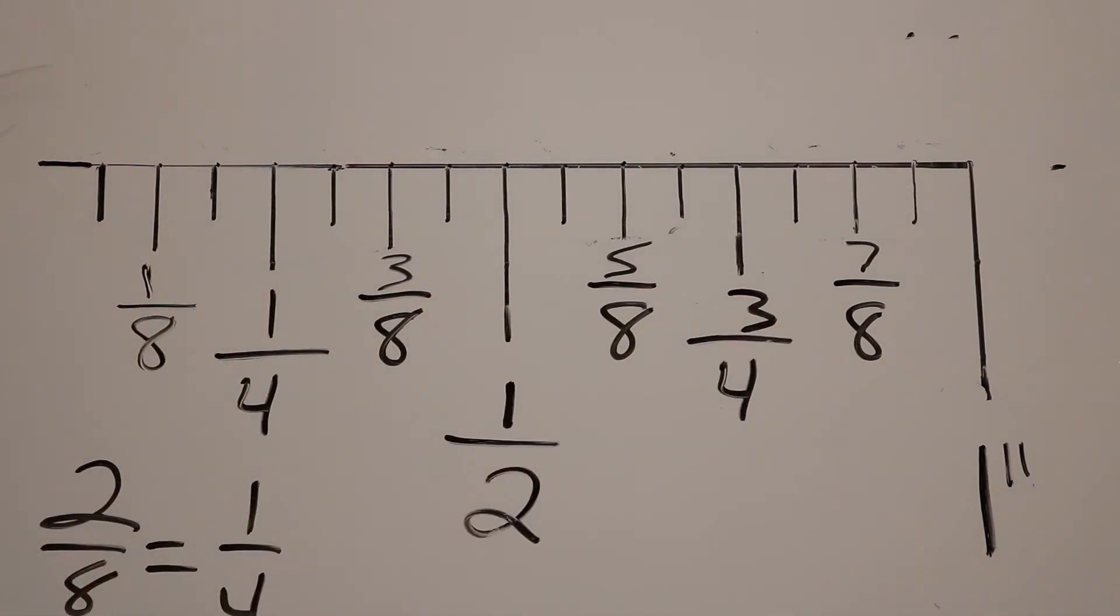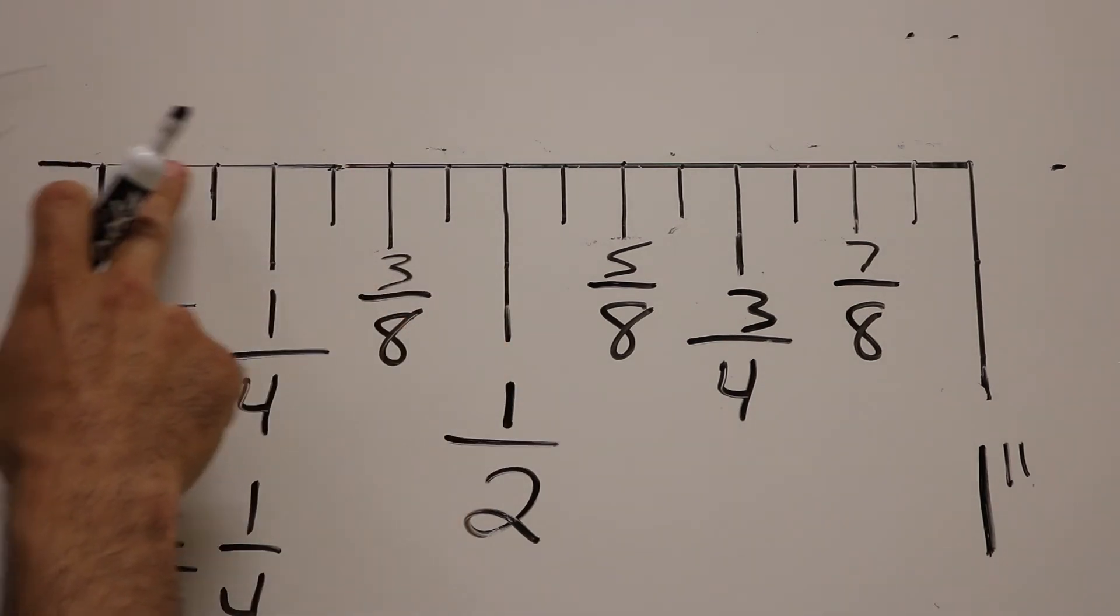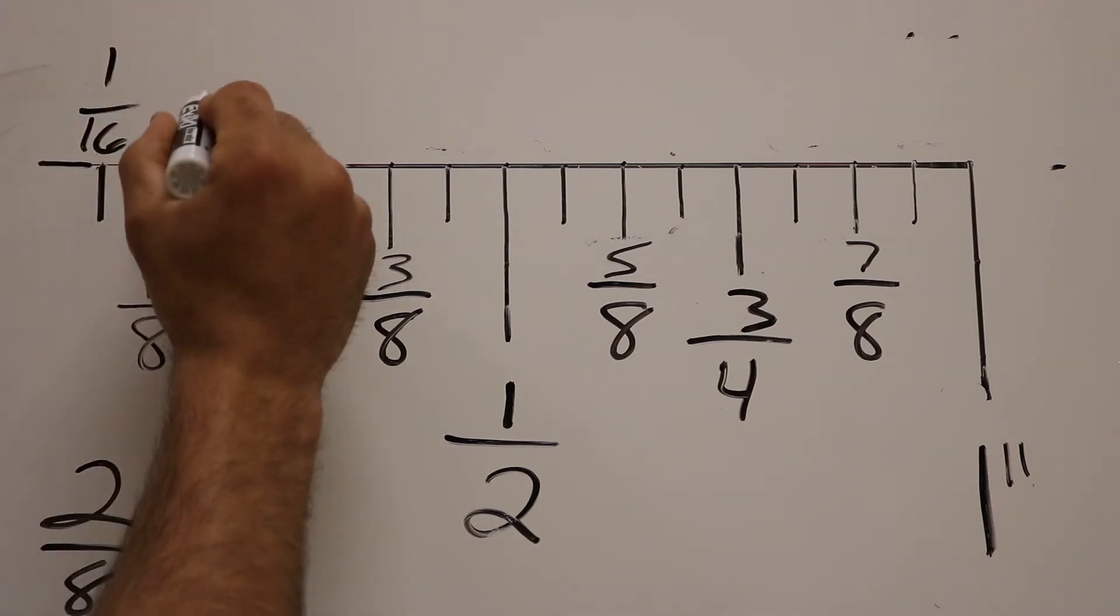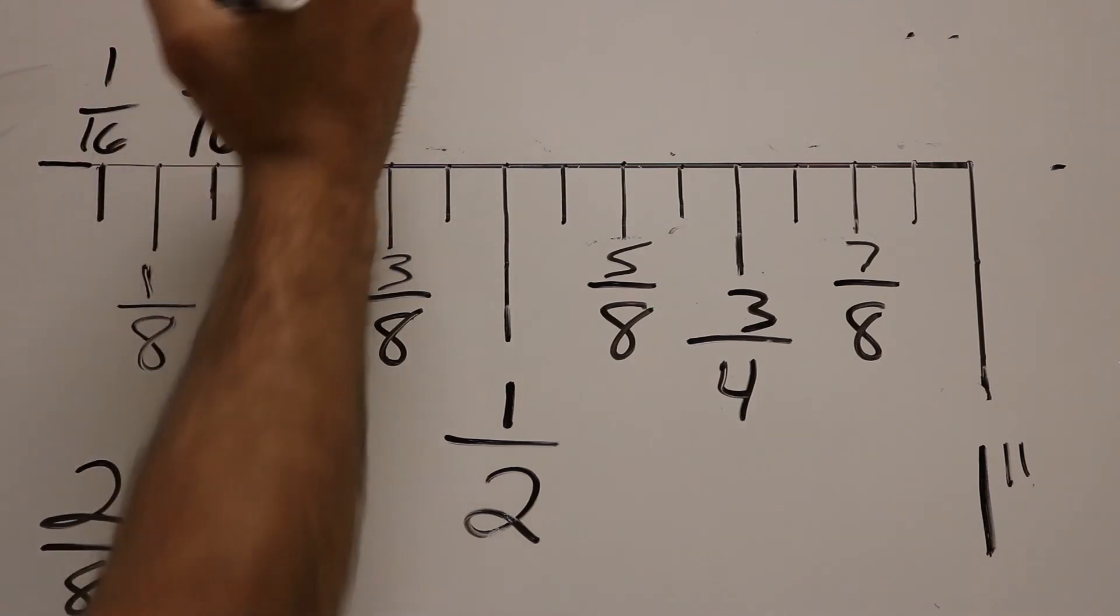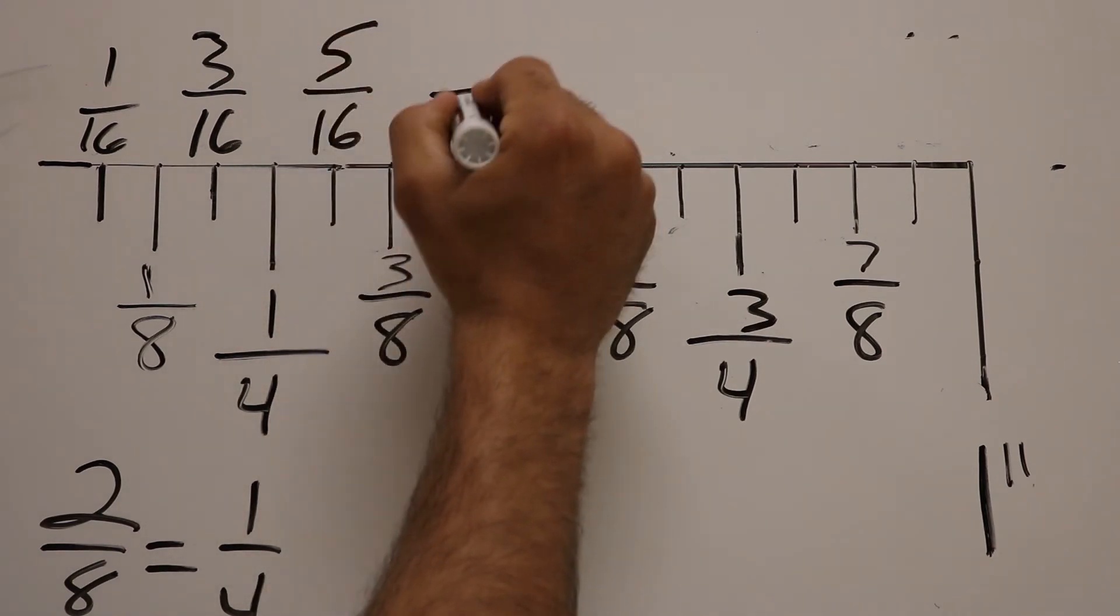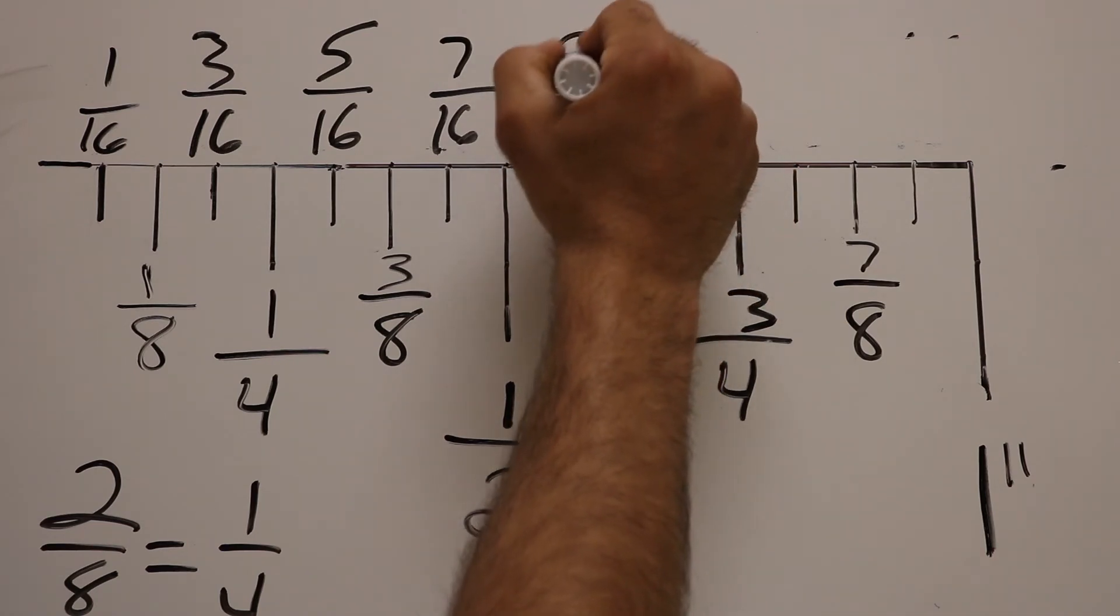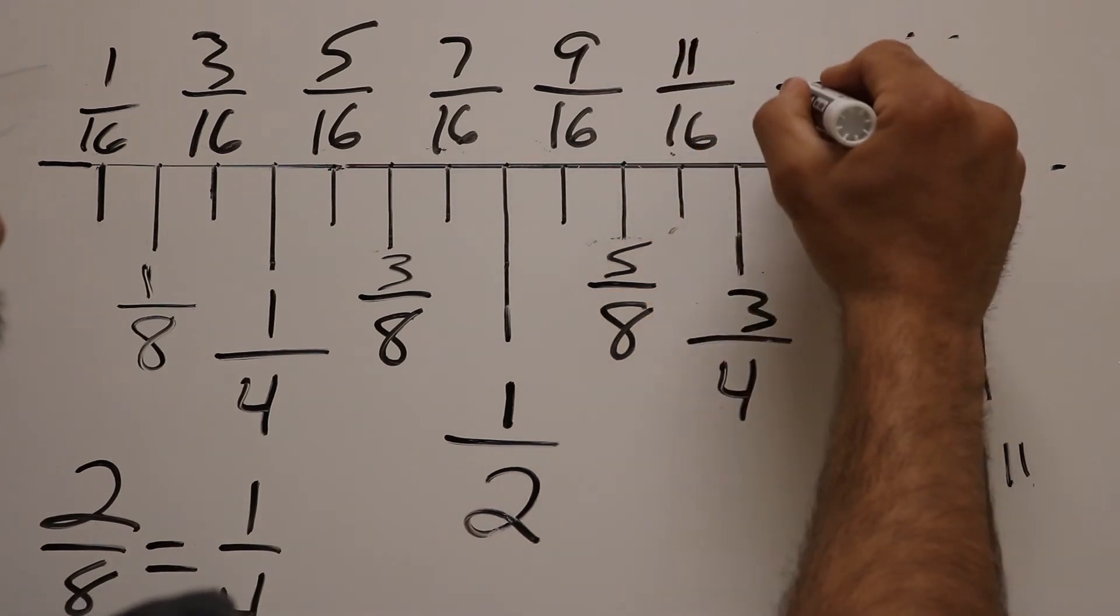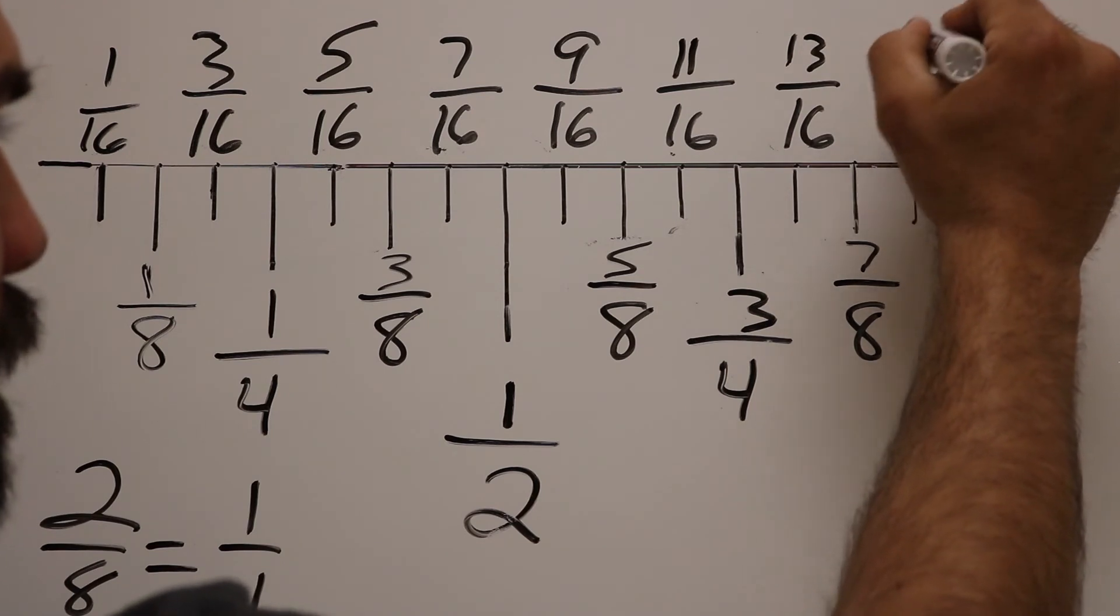And then last but not least is my sixteenths and as you can see, as I mentioned before, this is going to be in 16 different parts here. This will be my first one at one-sixteenth. This will be my second-sixteenth mark and I can start counting odds and that is three. And then I can continue counting odds, five, seven, nine, eleven, thirteen, and fifteen.